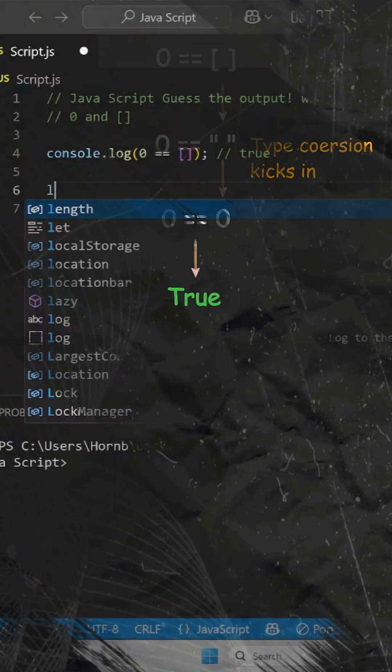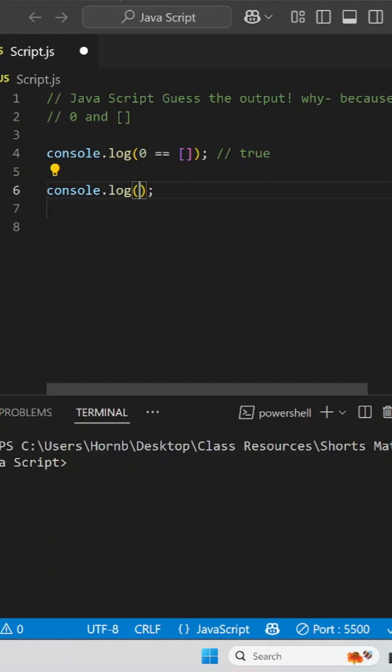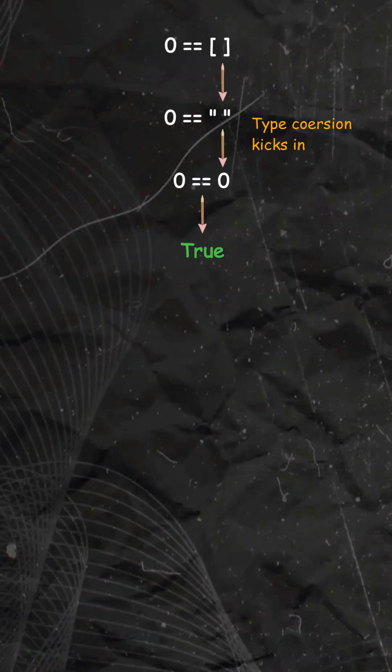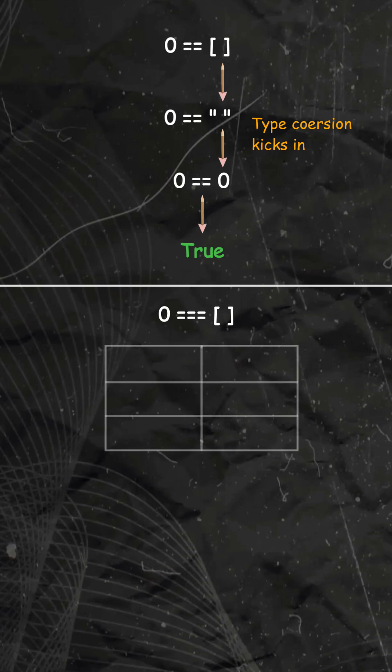But what if we use strict equality while comparing 0 to empty array? Well that gives us false because unlike loose equality, JavaScript does not type coerce in strict equality. Rather it checks for the type of the value under consideration.